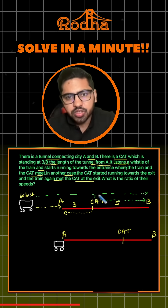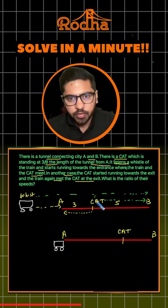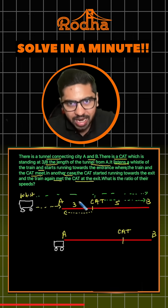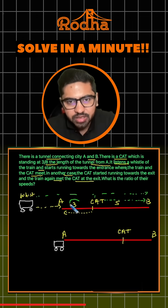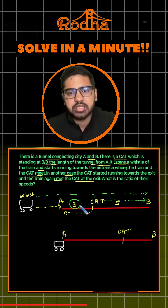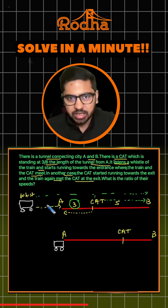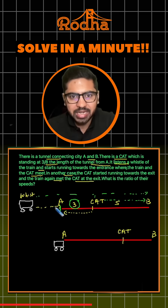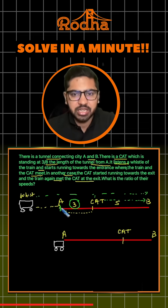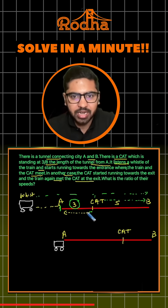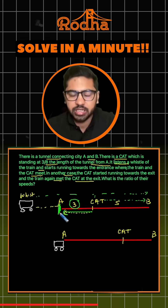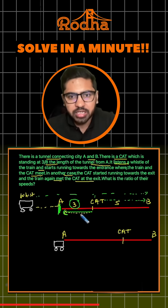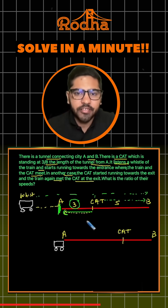Since time is constant, if the cat can run 3 units towards the entrance in the time the train reaches the entrance — because the train and cat meet at the entrance — the cat runs 3 units to the left.